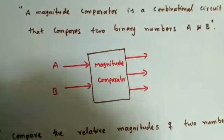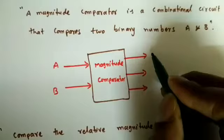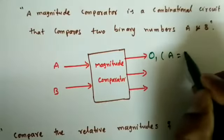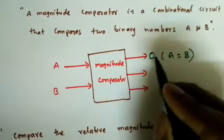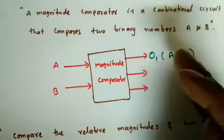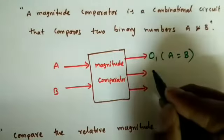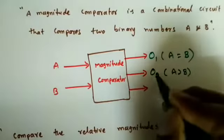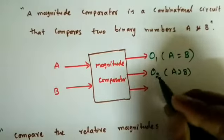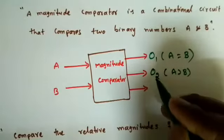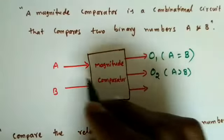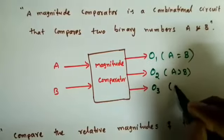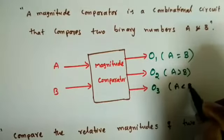We may get three outputs. Output O1 says if A is equal to B — if the output is one, we conclude both are equal. Next output O2 tells us A is greater than B — if O2 is high we can say A is greater than B. One more binary variable output O3 tells that A is less than B.